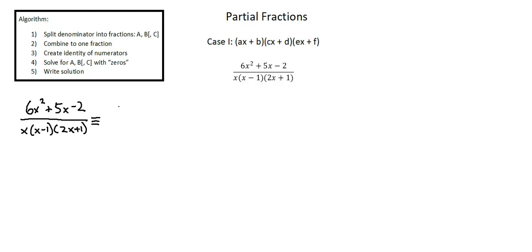So what is true? We're splitting our denominator into fractions A over the first factor x plus B over the second factor x minus 1 plus C over the third factor 2x plus 1.